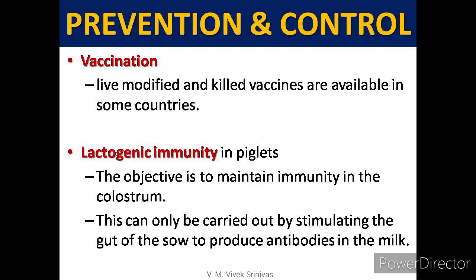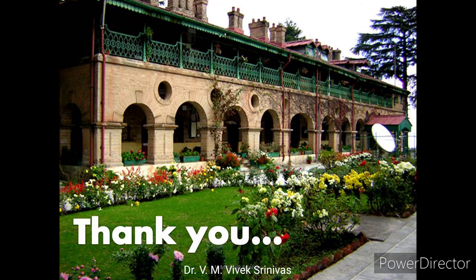For prevention and control of TGE, both attenuated and inactivated virus vaccines are available, with the goal of achieving lactogenic immunity in young pigs. The objective is to maintain immunity in the colostrum by vaccinating the sow. Due to the impermeable placenta, pigs are born agammaglobulinemic and are highly susceptible to a large range of infectious agents. Piglets rely solely on colostrum and milk antibodies for maternal lactogenic immunity, making passive lactogenic immunity the most promising and effective way to protect neonatal suckling piglets from enteric diseases.